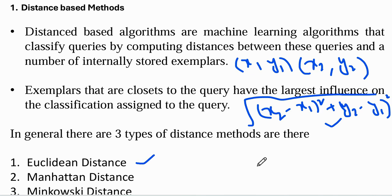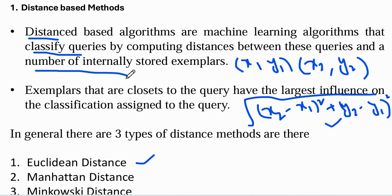So why are we using these distance-based methods in machine learning algorithms? Distance-based algorithms classify queries by computing the distance between the queries and a number of internally stored examples. Generally, distance-based methods are categorized into three types: Euclidean distance, Manhattan distance, and Minkowski distance.